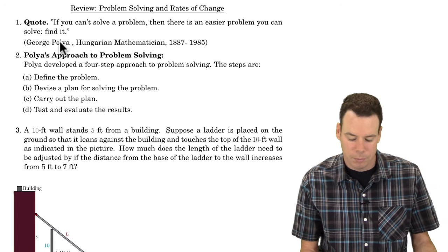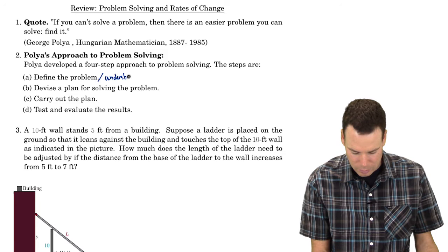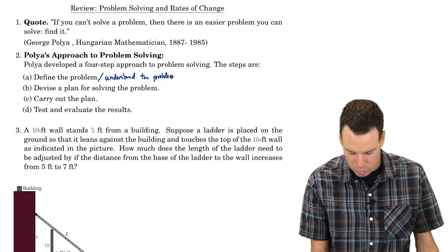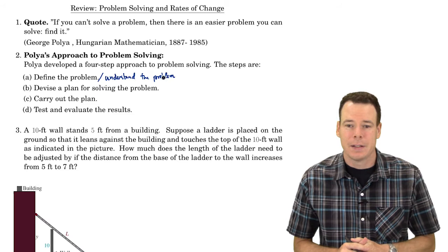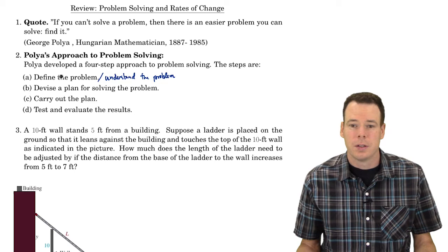So here are the four steps. The first step is to define the problem — that means understand the problem. What is it asking? Do you know what the problem is even asking for? Do you know what you're supposed to look for as a solution? What are you given? What do you want to find? These are the kinds of things involved in understanding the problem, or what Polya called defining the problem.